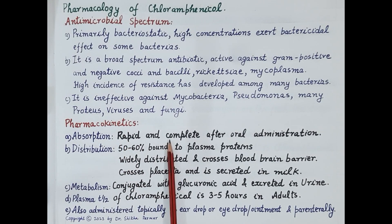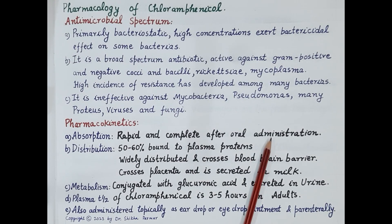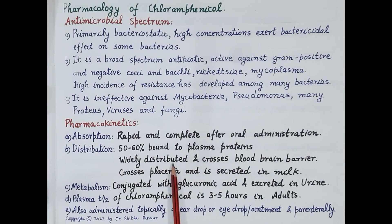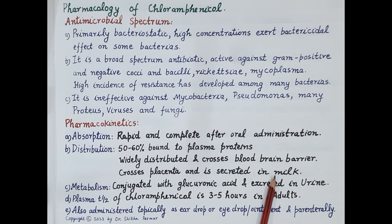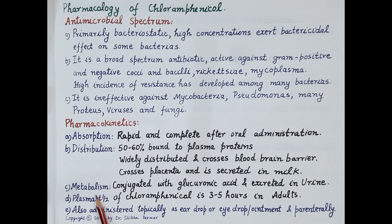Chloramphenicol is rapidly and completely absorbed after oral administration, making oral the common route of administration. About 50 to 60 percent is bound to plasma proteins. It is widely distributed and crosses the blood-brain barrier. It also crosses the placenta and is secreted in breast milk, and therefore its use is contraindicated in pregnancy and during lactation.